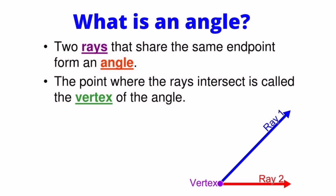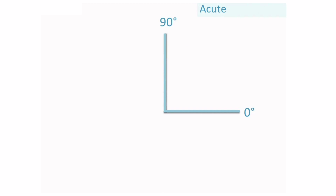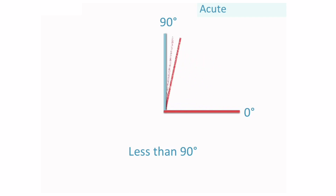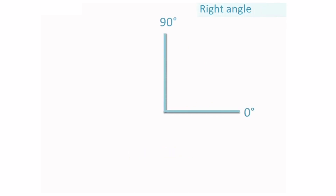Acute angles are angles which are less than 90 degrees. The following angles are all acute angles. Right angles: a right angle is an angle which is exactly 90 degrees.